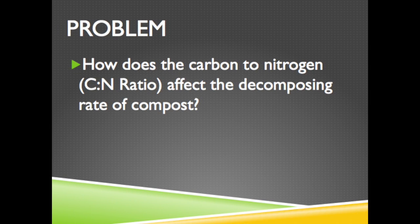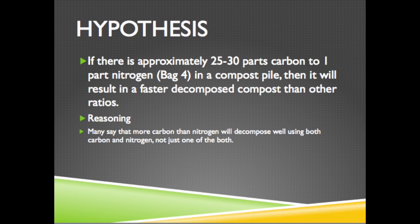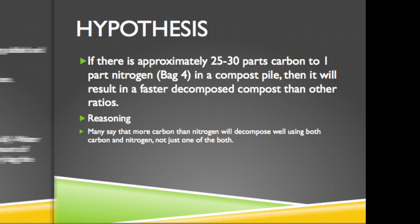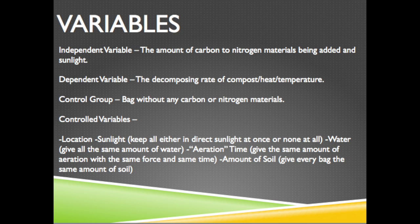The problem for this experiment is: how does the carbon to nitrogen ratio affect the decomposing rate of compost? My hypothesis was that if there was 25 to 30 parts carbon to one part nitrogen, it will result in a faster decomposed compost than other ratios. My reasoning is because many people say that more carbon than nitrogen will decompose while using both carbon and nitrogen, and not just one of the two.